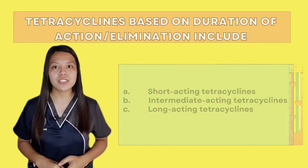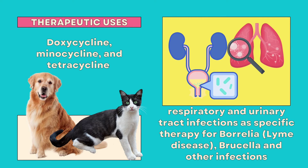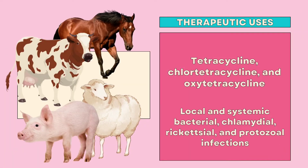For its therapeutic uses, in small animals such as dogs and cats, doxycycline, minocycline, and tetracycline are used in the treatment of respiratory and urinary tract infections, a specific therapy for Borrelia or Lyme disease, Brucella, and other infections. In large animals, tetracycline, chlorotetracycline, and oxytetracycline are used in the treatment of local and systemic bacterial, chlamydial, rickettsial, and protozoal infections in animals, including cattle, sheep, swine, as well as horses.